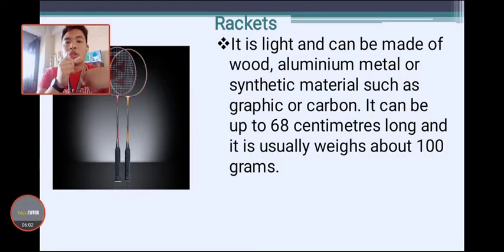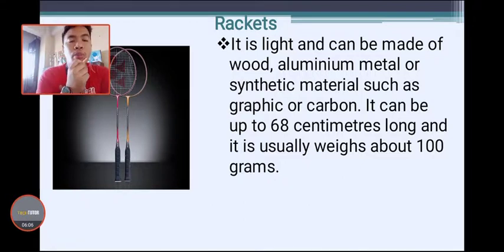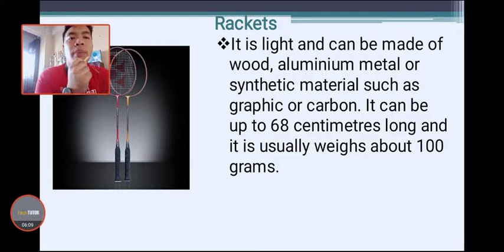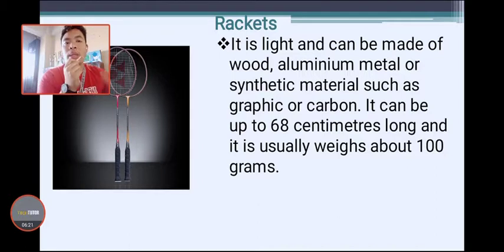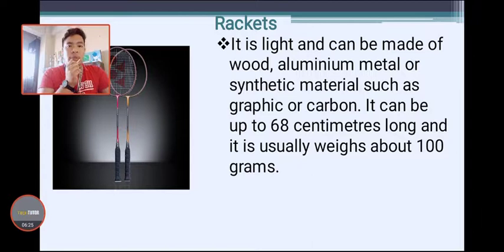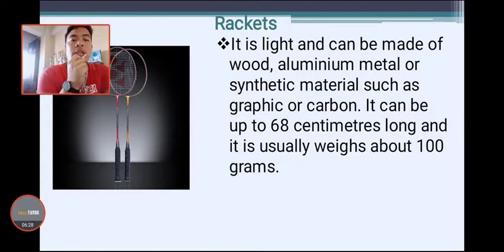The racket should be light and can be made of wood, aluminum, metal, or synthetic materials such as graphite or carbon. It can be up to 68 centimeters long and usually weighs about 100 grams. Commonly, synthetic materials are used for rackets.